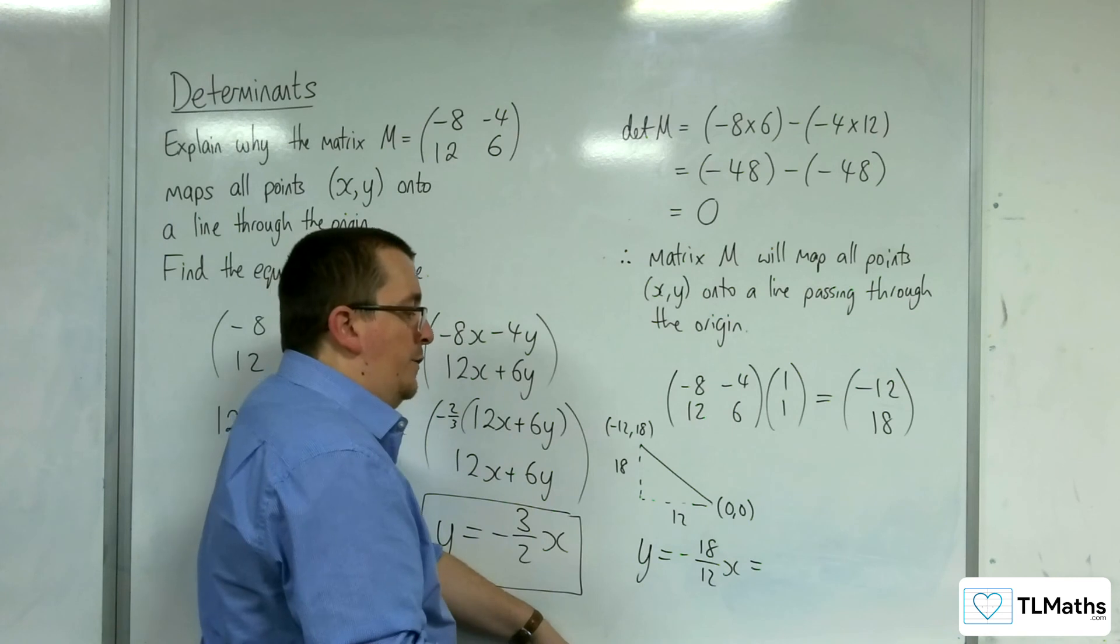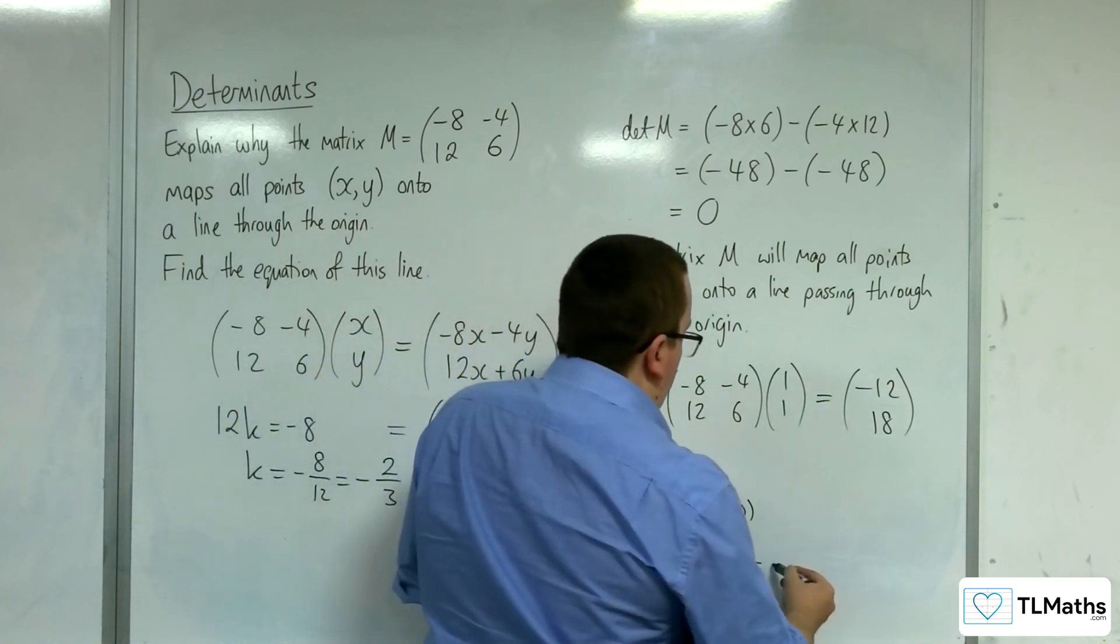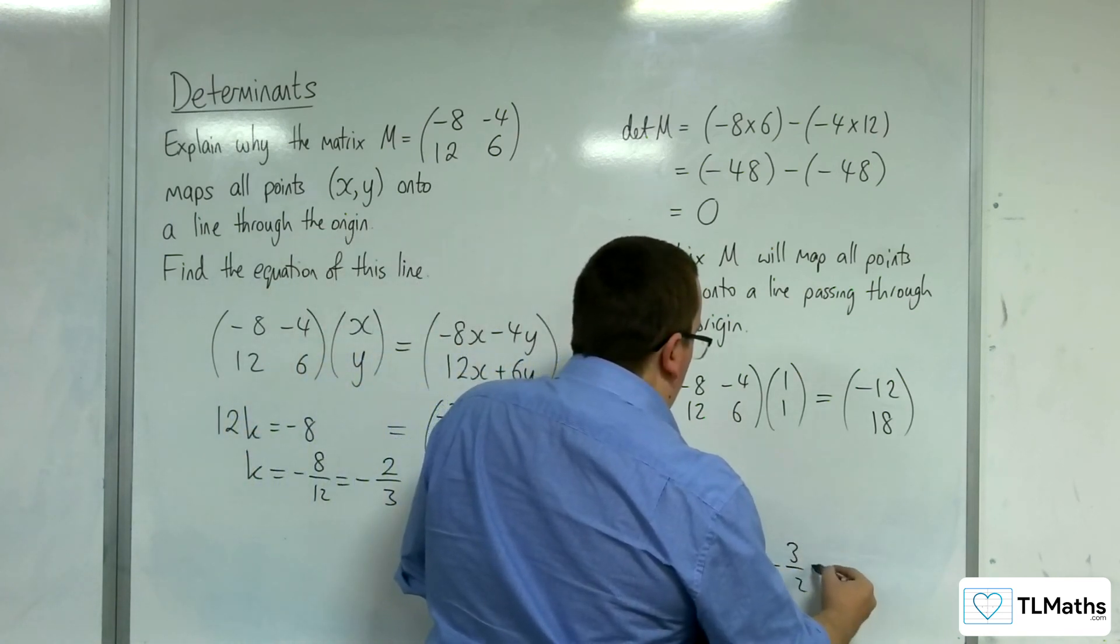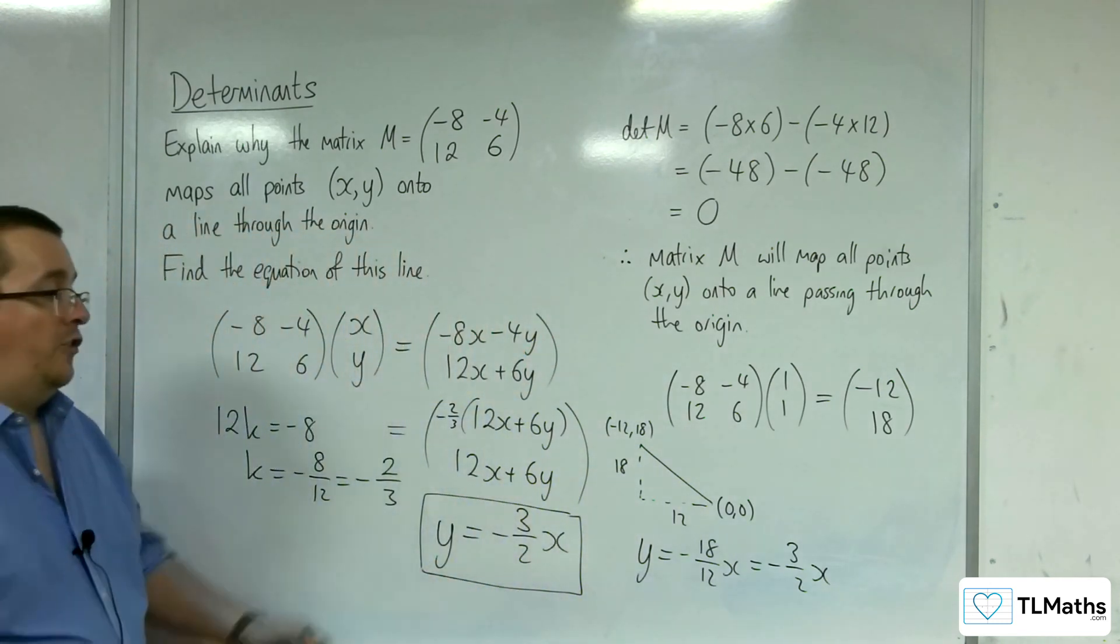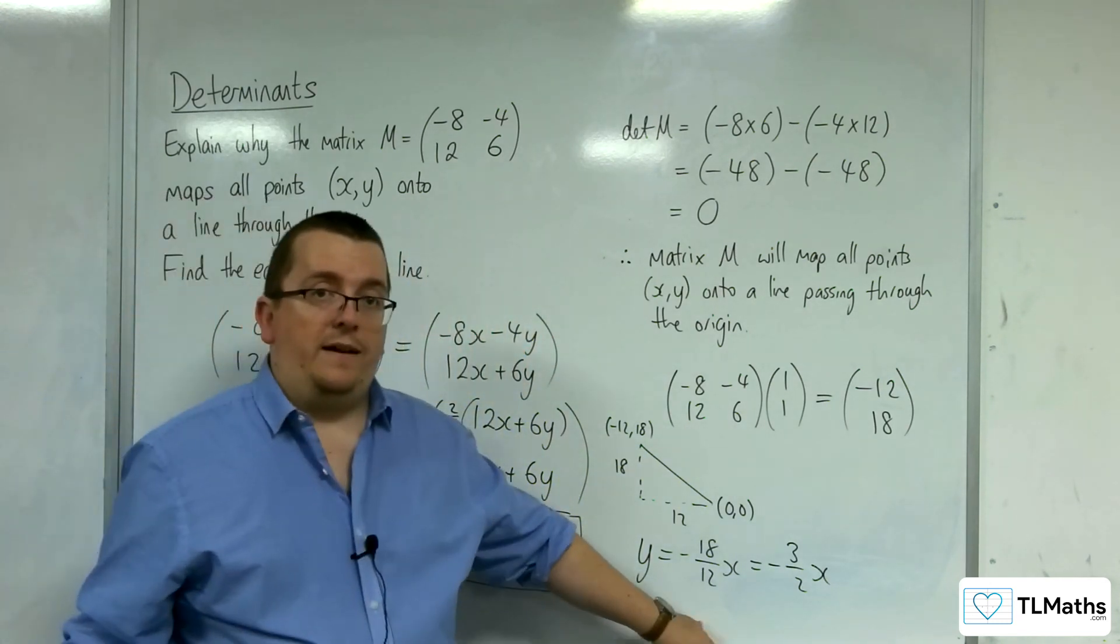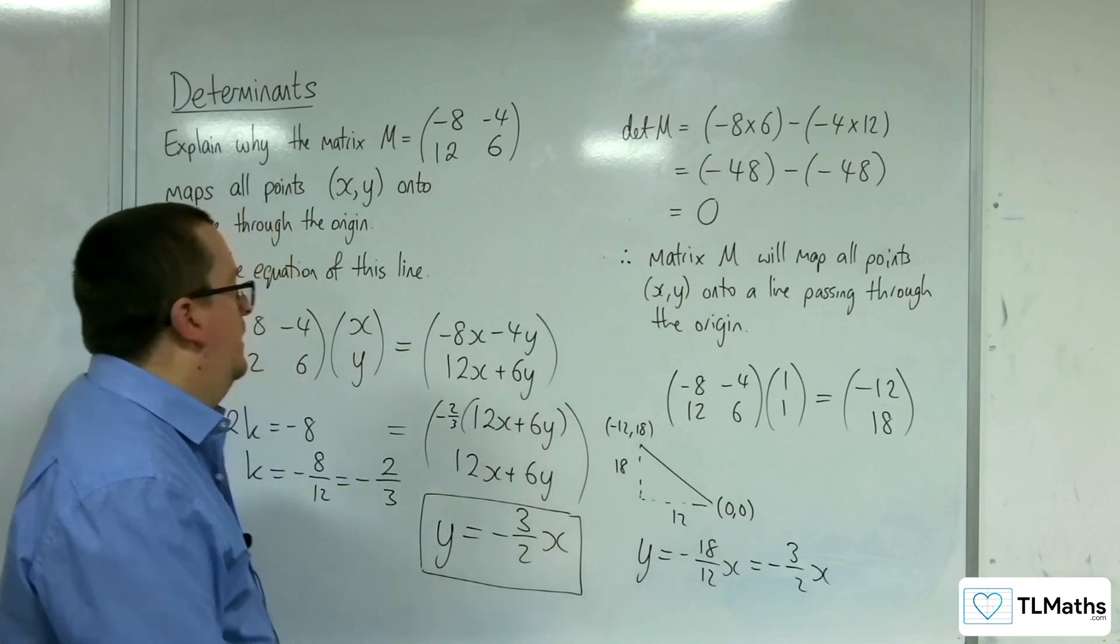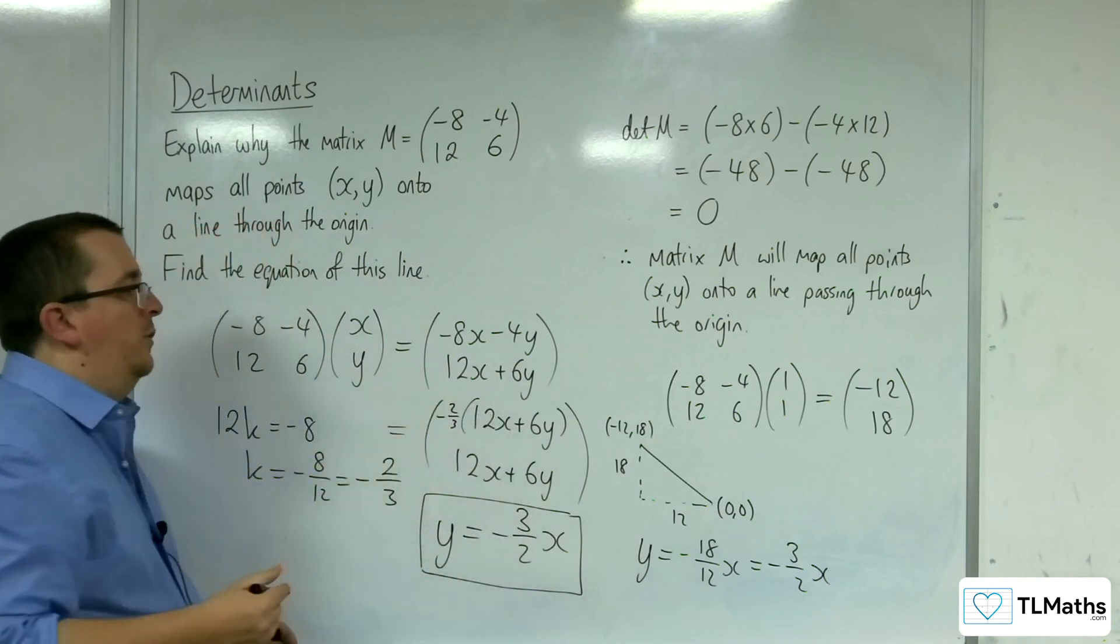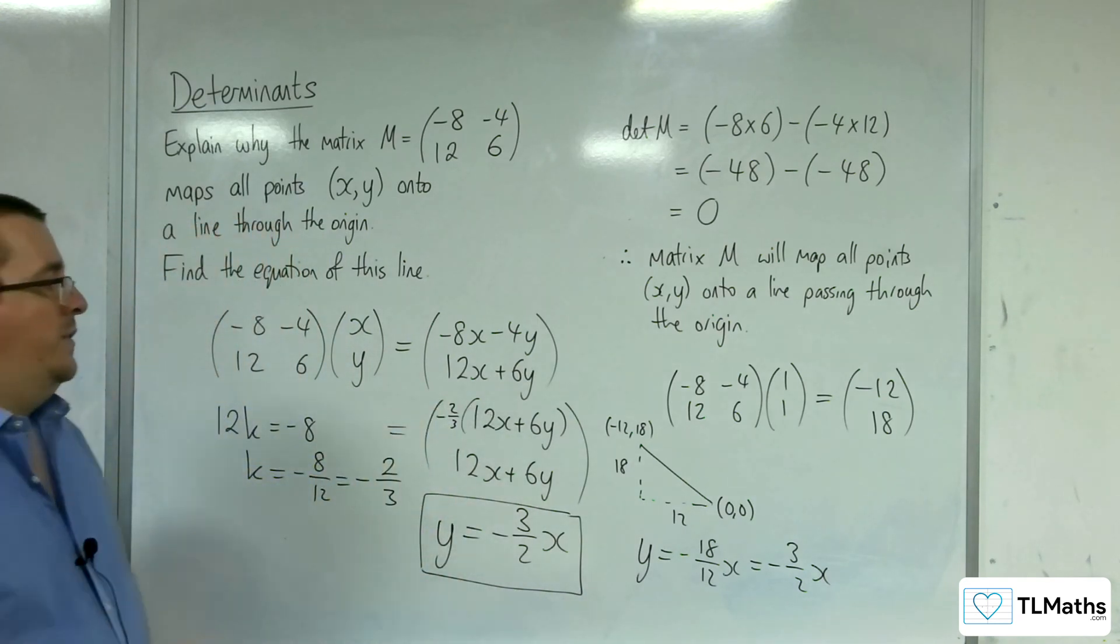And negative 18 over 12 simplifies down to minus 3 halves. Okay. And you probably expect you'll probably find that an easier method than spotting this reciprocal that we've had to deal with here.